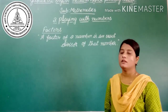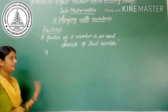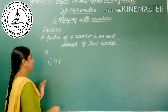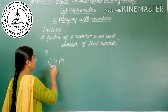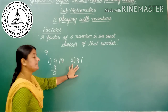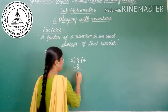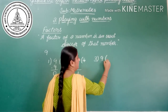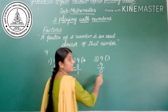Let's check which numbers exactly divide 9. I will take the example of 9 and start from 1. 1 divides 9: 1 times 9 is 9, remainder is 0. Then 2: does 2 exactly divide 9? 2 times 4 is 8; 9 minus 8 is 1, so it does not exactly divide. Then 3: 3 times 3 is 9; 9 minus 9 is 0, so 3 exactly divides 9.